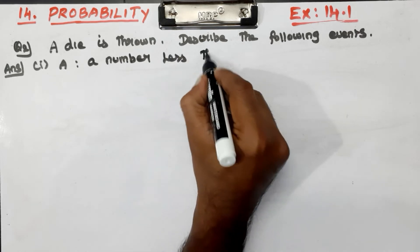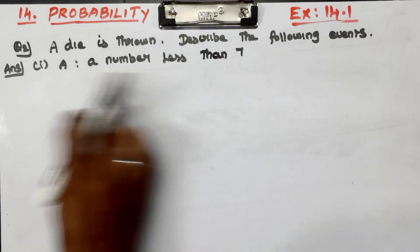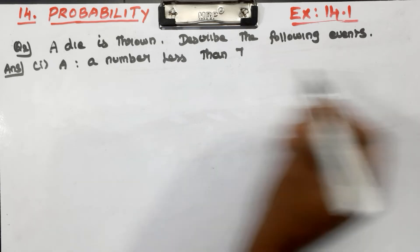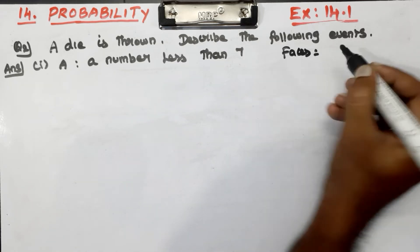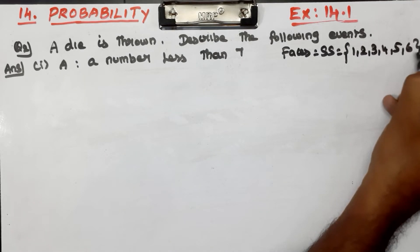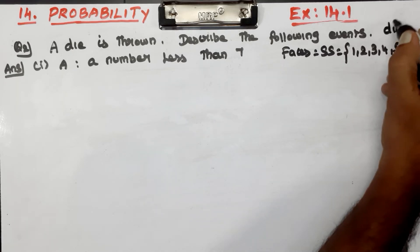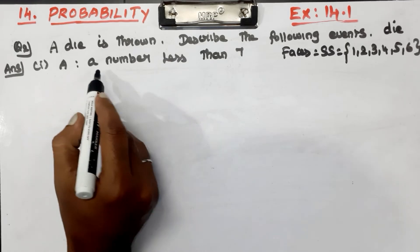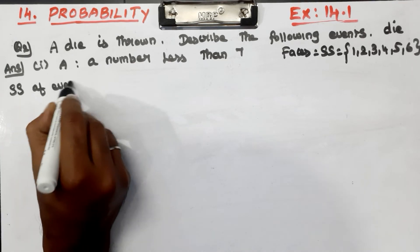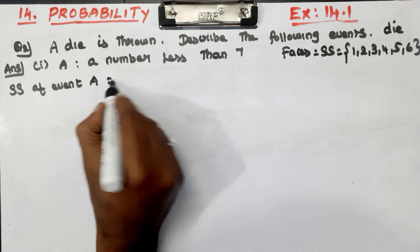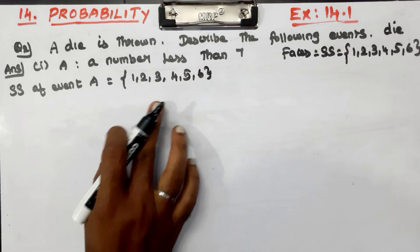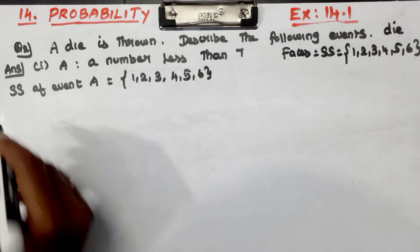Event A: numbers less than 7. The faces of the die give us the sample space. The sample space of the die is 1, 2, 3, 4, 5, 6. So here, Event A — numbers less than 7 — the sample space of A is 1, 2, 3, 4, 5, 6.